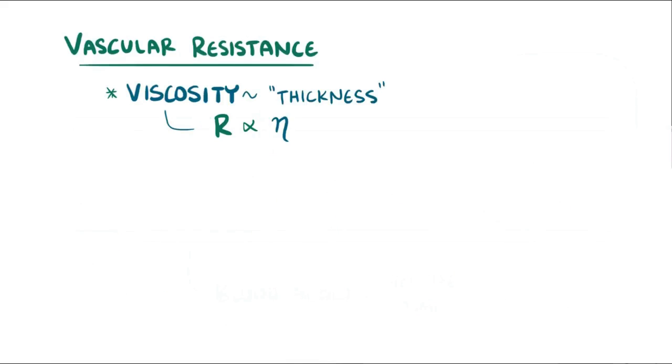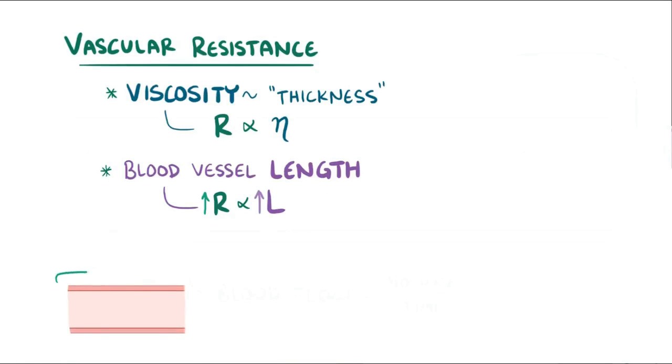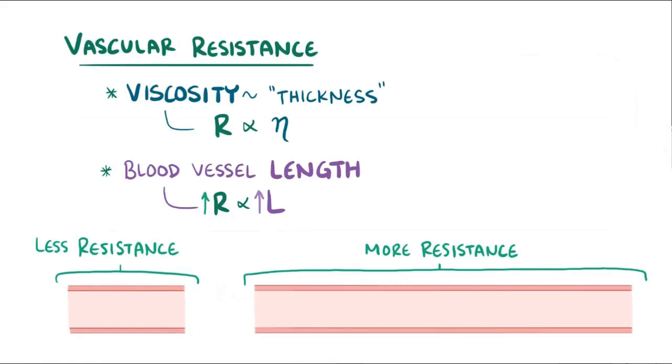A second factor that affects resistance is total blood vessel length. Just like viscosity, the relationship is directly proportional, and this can be represented as resistance is proportional to L for length. So simply put, shorter vessels have less resistance, and longer vessels have more resistance, because there's more friction resisting flow. This means that as a child grows into an adult, their blood vessels will get longer, and their peripheral resistance will go up.